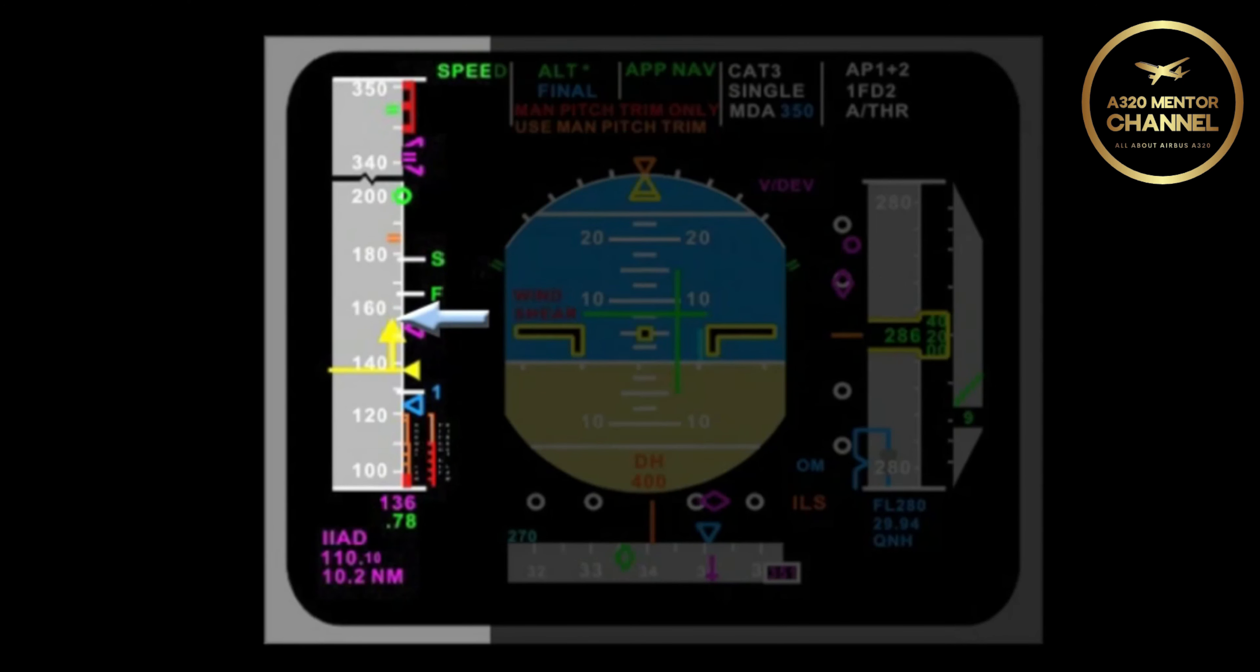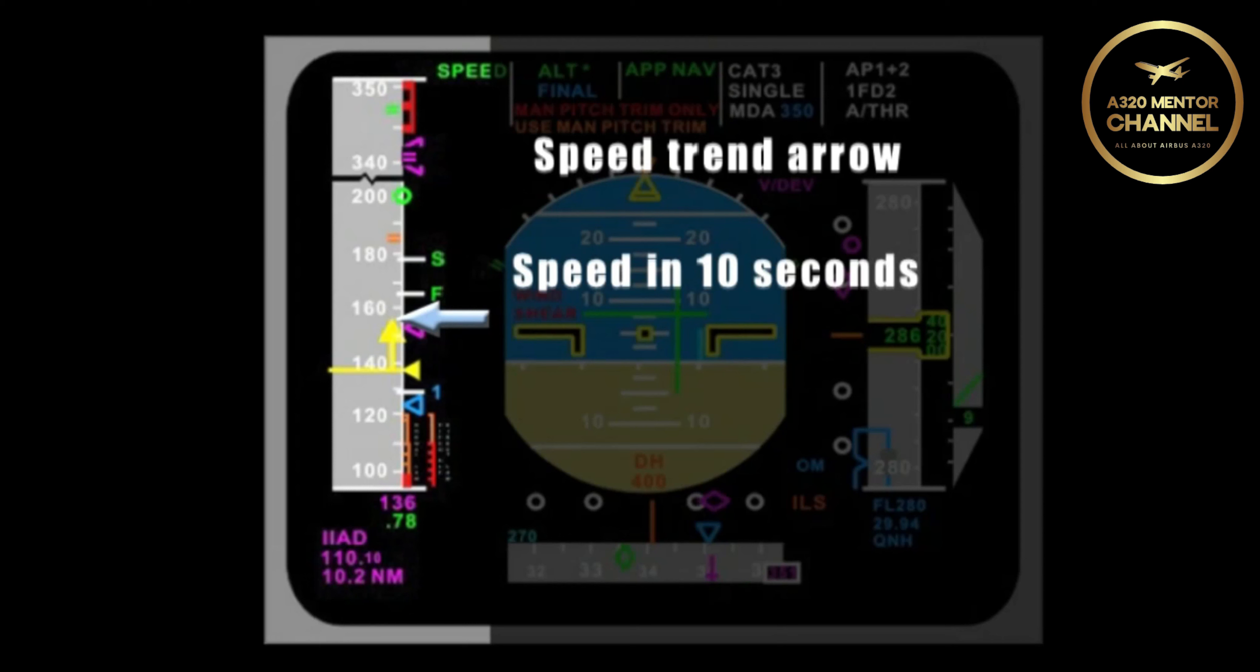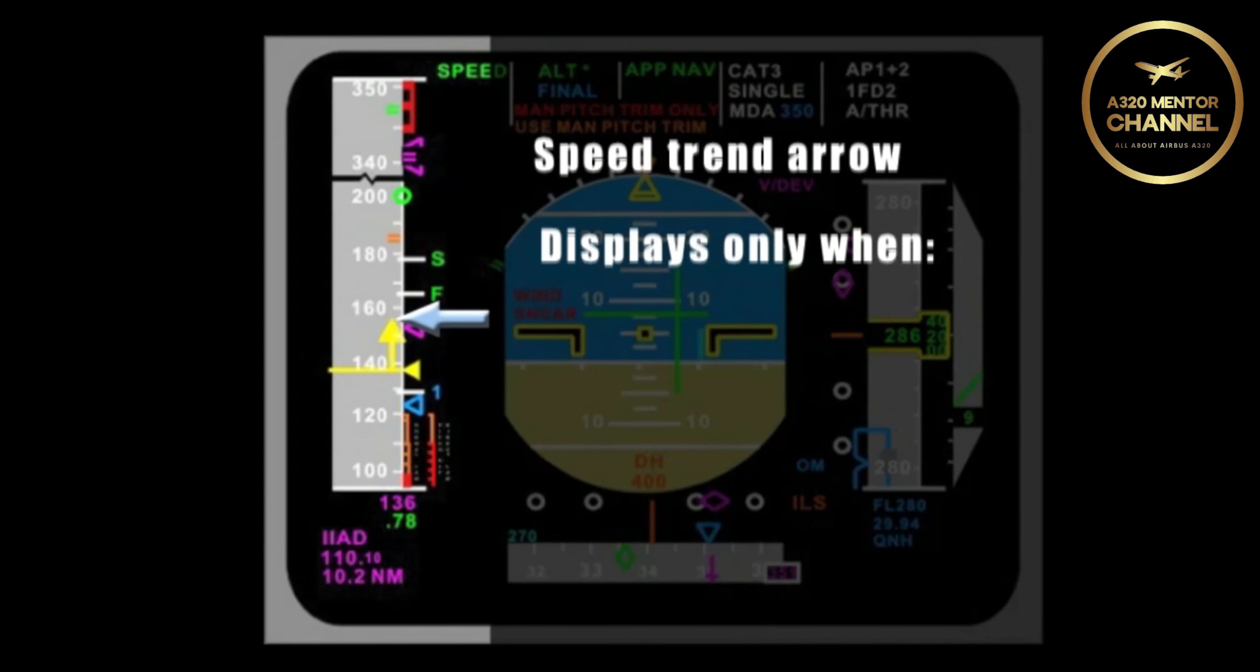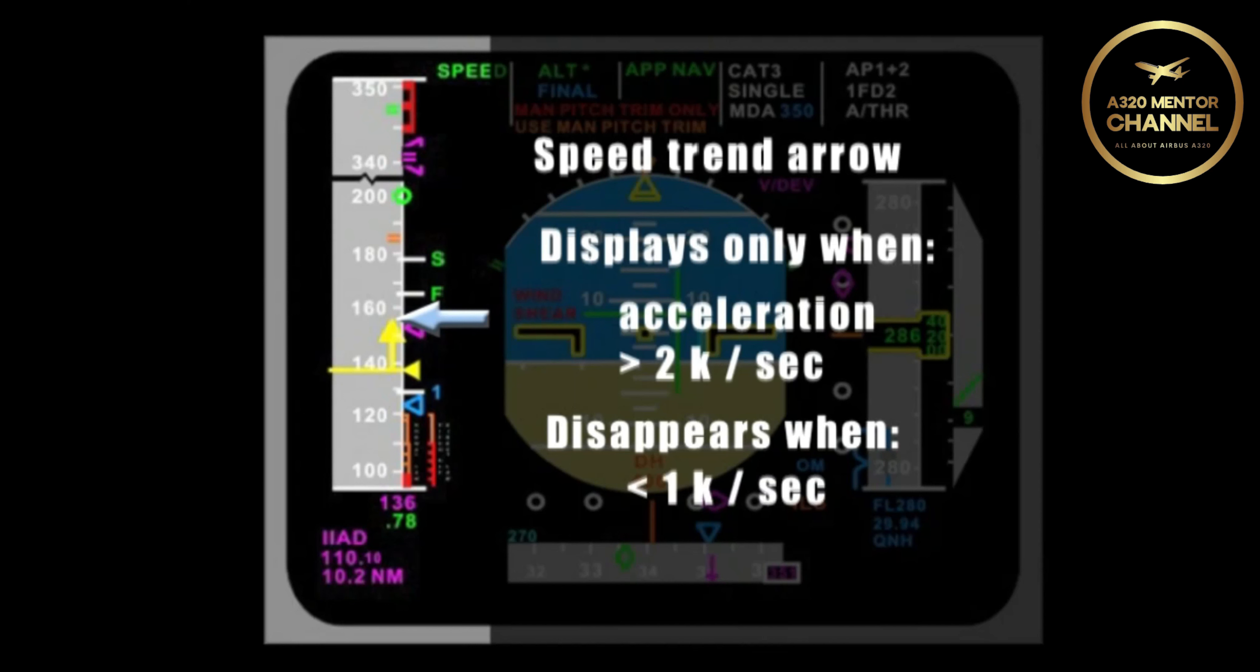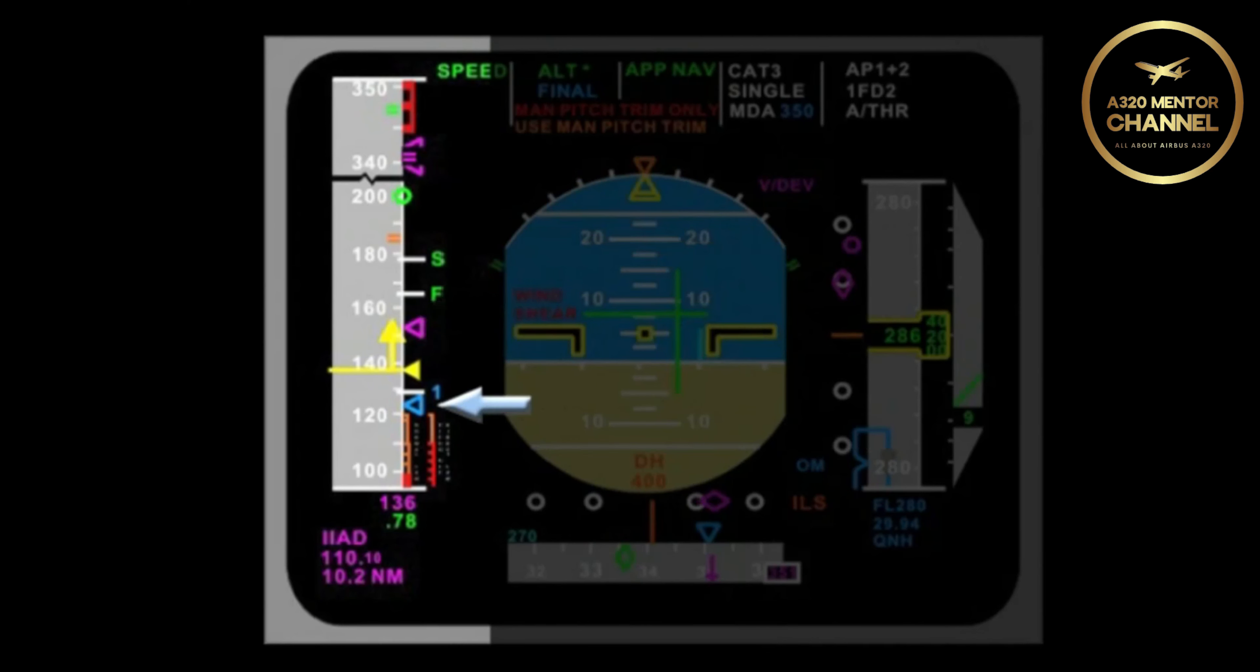What is the vertical yellow arrow off of the speed line? That is the speed trend arrow. It indicates the speed at which the aircraft will be in 10 seconds, if acceleration remains constant. Is the speed trend arrow always displayed? No. It only displays when acceleration is greater than 2 knots per second, and disappears when acceleration is less than 1 knot per second.